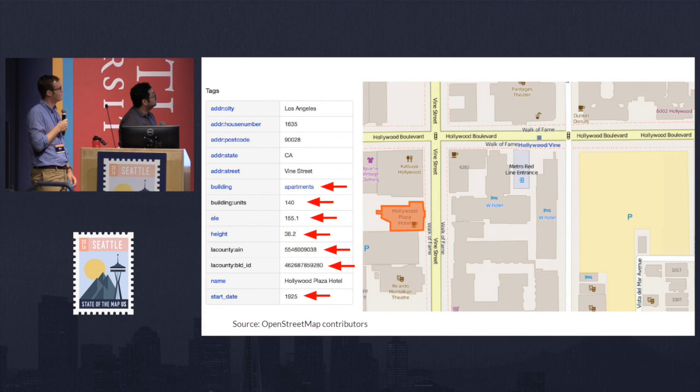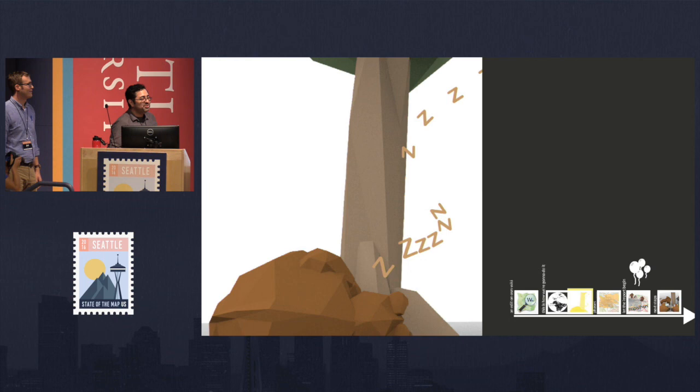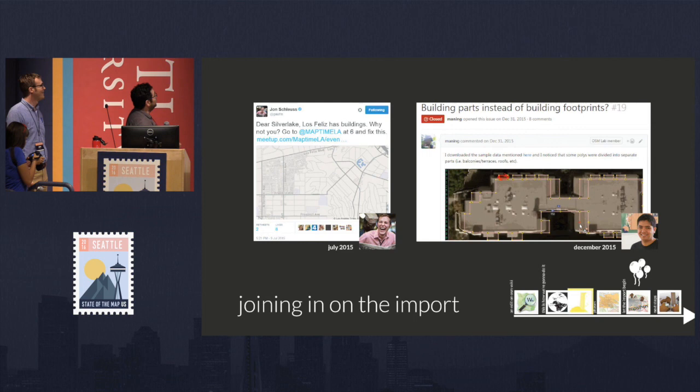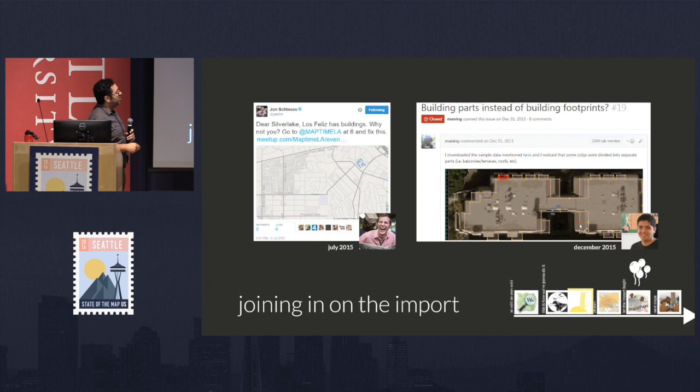After we planned it out, things kind of lingered because we both have full-time jobs. We kind of snoozed it a little bit. Then about five months later, this individual next to me started complaining about Silver Lake not having enough buildings. So he joined in around July 2015. This awesome individual, Manning Simbali, started going into the nitty-gritty of the dataset in terms of the outlines. For instance, Pasadena had somehow been tracing the awnings and balconies of buildings.